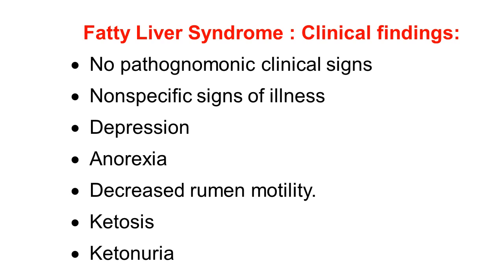We have understood the etiology and learned the pathogenesis; now we are going to study the clinical findings of fatty liver syndrome. Friends, remember there are no pathognomonic clinical signs that allow a definitive diagnosis — no characteristic or specific signs — but certain major signs are present: depression, anorexia, decreased rumen motility, and ketosis with ketonuria. Ketosis and ketonuria mostly accompany fatty liver syndrome — as we also studied in the ketosis video, fatty liver syndrome mostly accompanies ketosis.